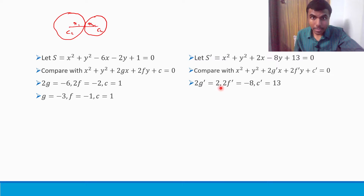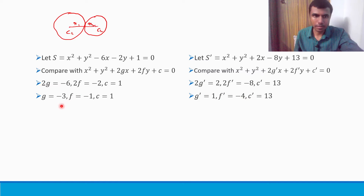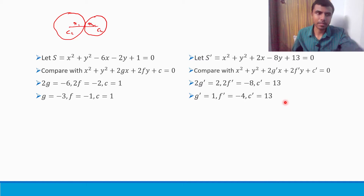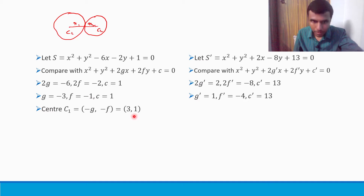The center of a circle is (−g, −f). So C1 is (−g, −f). Since g is minus 3, minus g is 3; f is minus 1, so minus f is plus 1. Therefore C1 is (3, 1). For C2: g dash is 1, so minus g dash is minus 1; f dash is minus 4, so minus f dash is plus 4. Therefore C2 is (−1, 4).